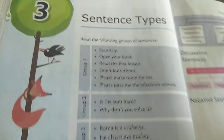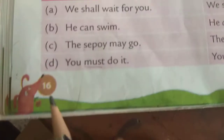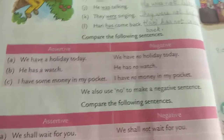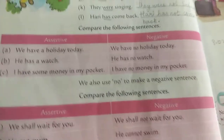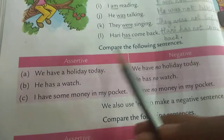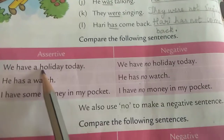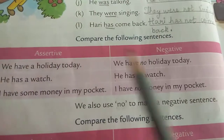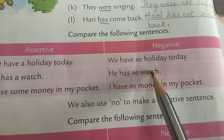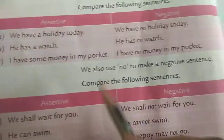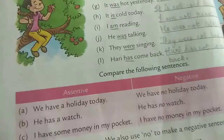Lesson number three, sentence types, page number 16. Before starting exercise number two, let us see this table again. Compare the following sentences — assertive sentences and negative sentences are given.